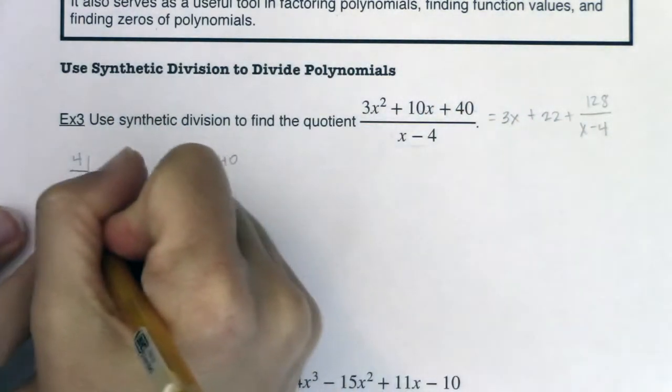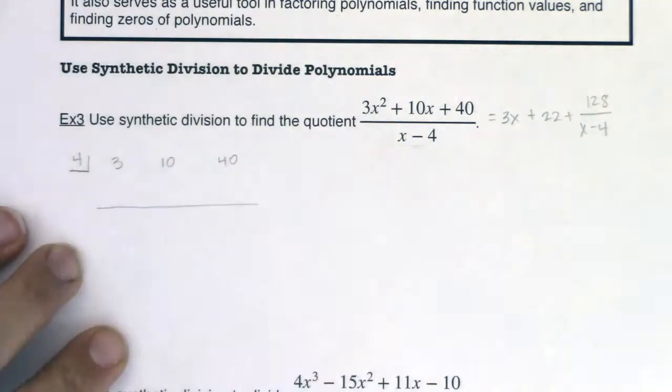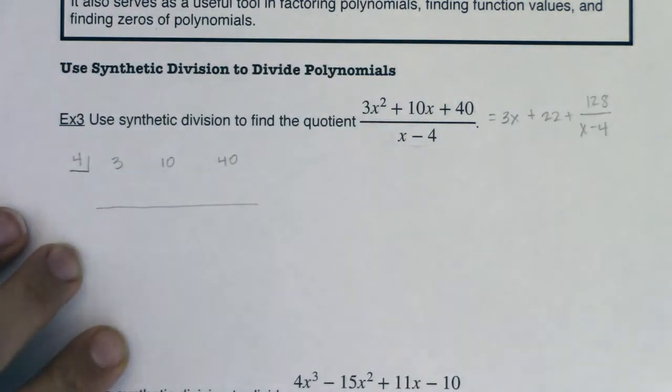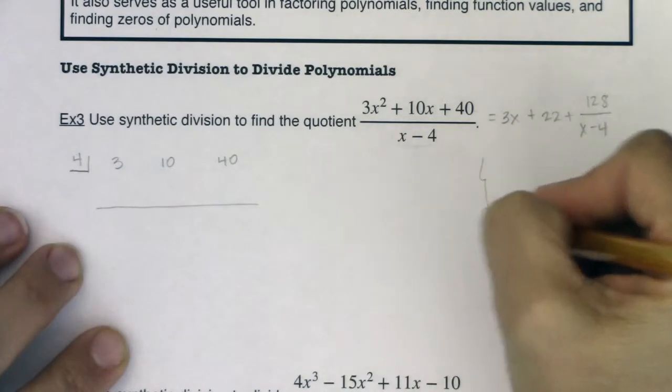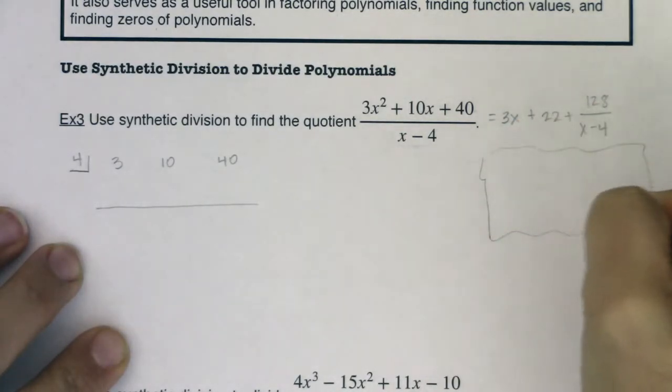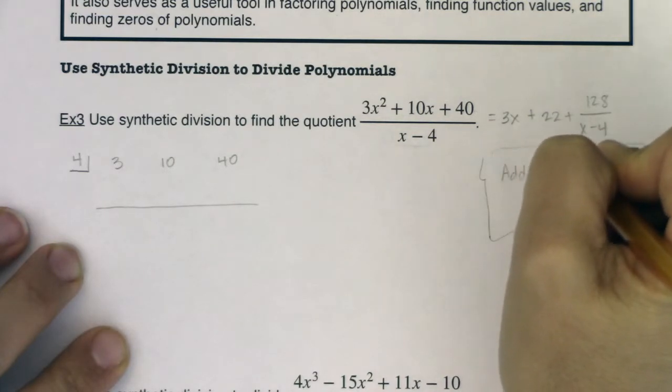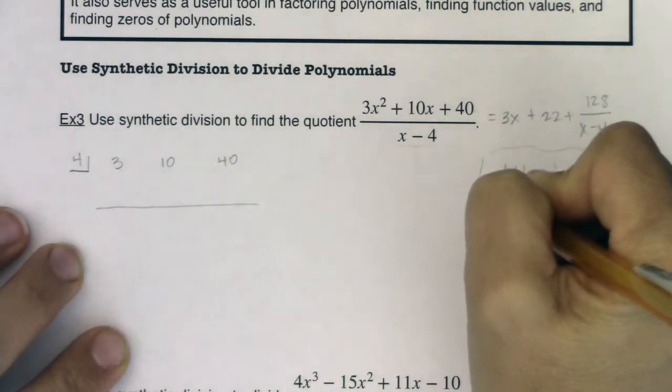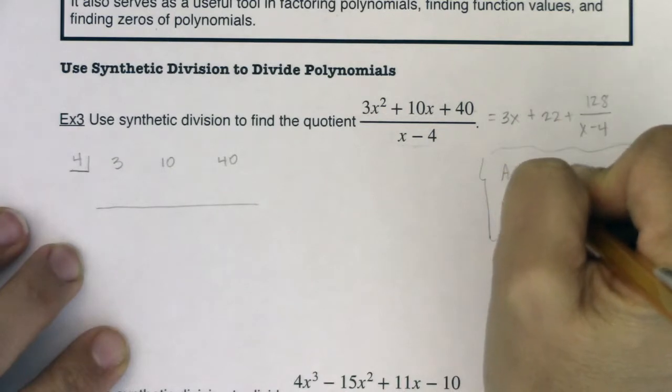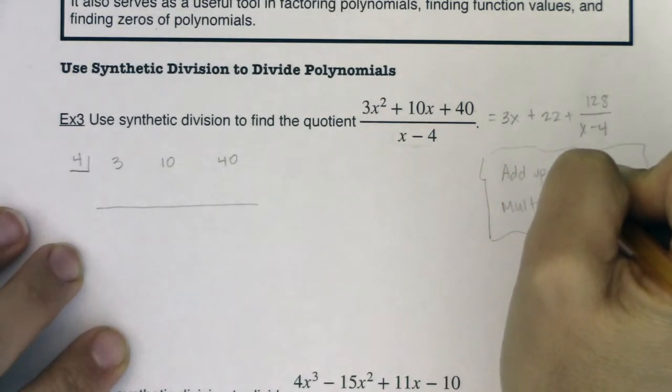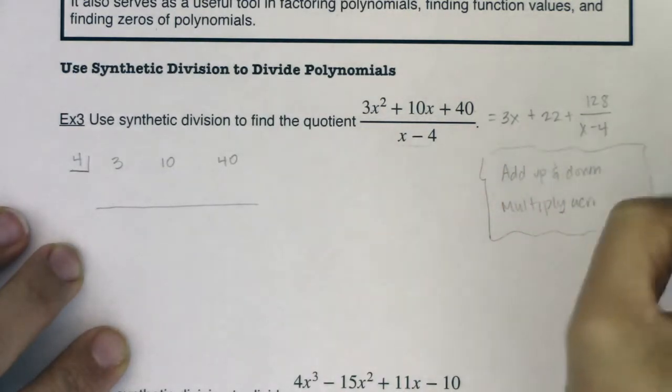All right, so this is how this works. Put a line here. Here's where you're going to do some math. And usually, when I use synthetic division, this was how I told myself to work it. I would say I would add up and down and I would multiply across. Now, if this works for you, great. If it doesn't, then ignore it. I used to just give myself all sorts of things to help me remember.